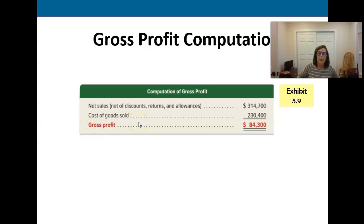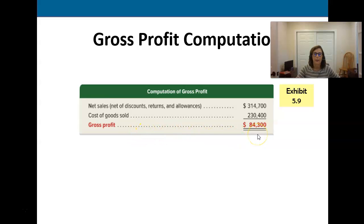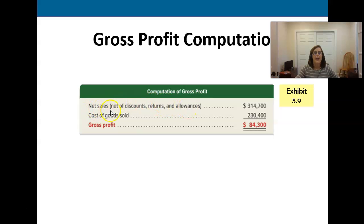The top of the income statement has this new figure we talked about in one of the earlier videos in this chapter called gross profit. Gross profit starts with the sales you've made, then we subtract all of the discounts, any returns, any allowances, and that gets us to net sales. From net sales we subtract the cost we paid for those items that we sold, and that gets us to gross profit.